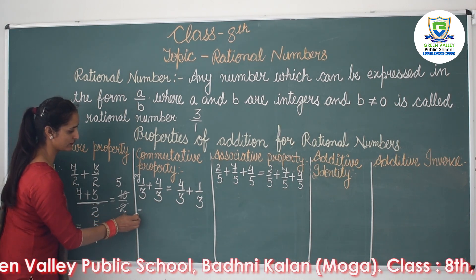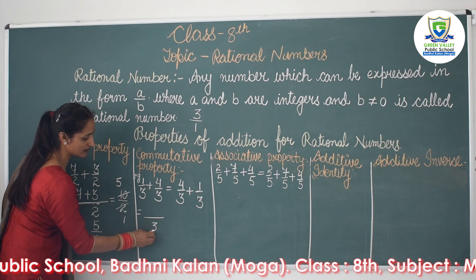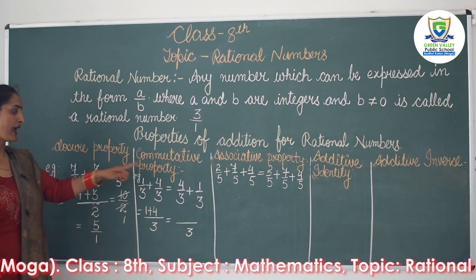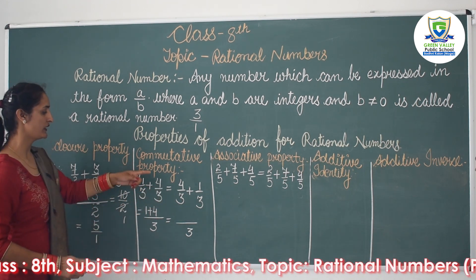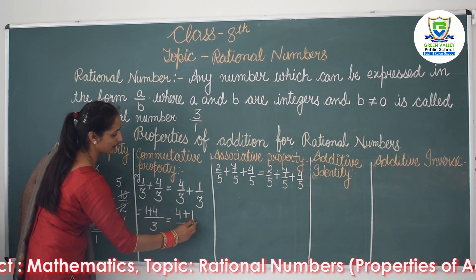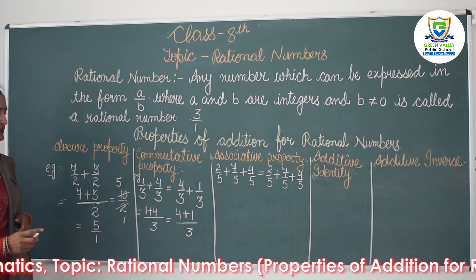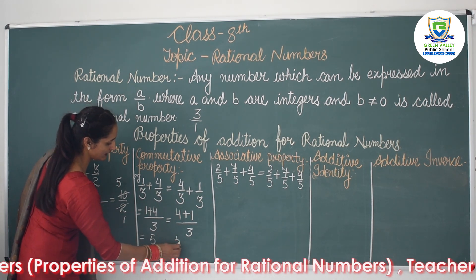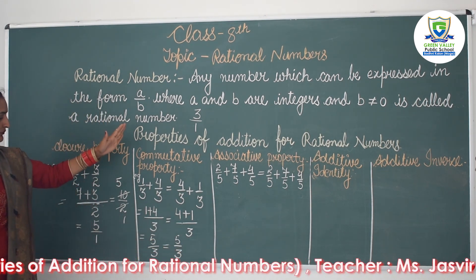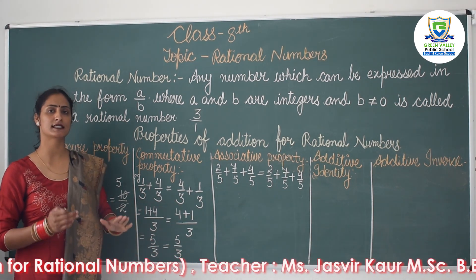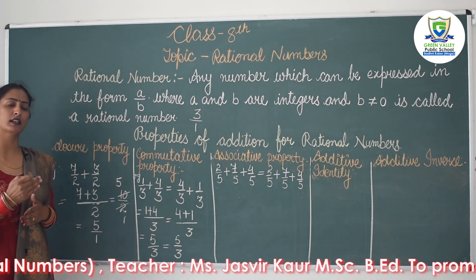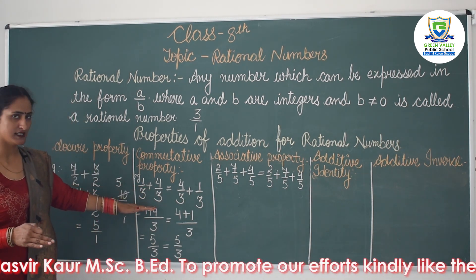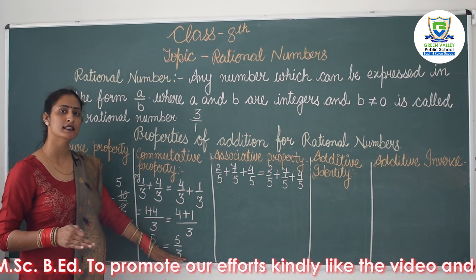So we can add these numbers directly. On the left-hand side, write the denominator once and the numerators as 1 plus 4. On the right-hand side, write the denominator once and the numerators as 4 plus 1, since we changed the order. The answer on the left side is 5/3, and on the right side the answer is also 5/3. The answer for both cases is the same, and this is the commutative property — rational numbers can be added in any order.